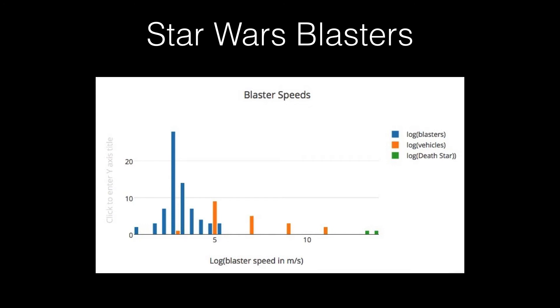And you can see in this plot here that the Death Star shoots, it's not really blasters, but it's really, really, really fast. And then if you look at blasters from spaceships, they're pretty fast. And then there's a wide range of speeds for handheld blasters. But in general, some of them are going around the speed of a Nerf gun. Some are going faster than that. But it's interesting to talk about why it is the way it is. That's all I'm going to say about that.